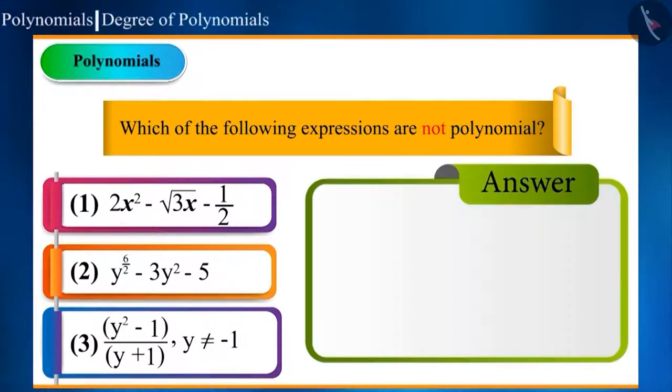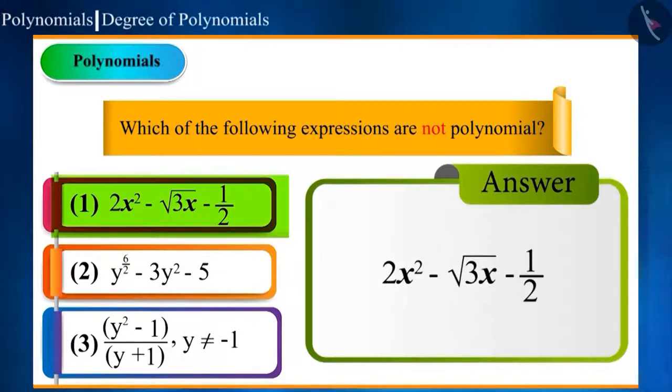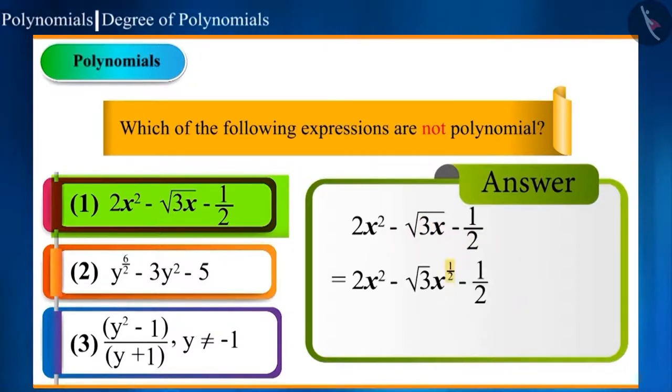The first option is 2x² - √3x - 1/2. Here, in the second term, x is also within the root with 3, which means the power of x is 1/2, which is not a whole number. So, it is not a polynomial.